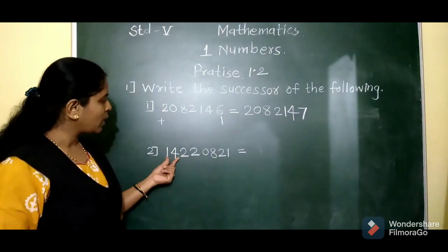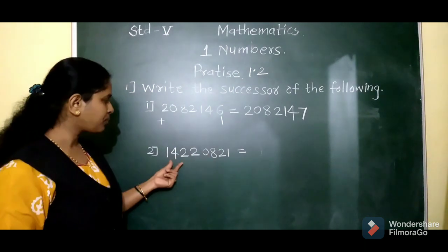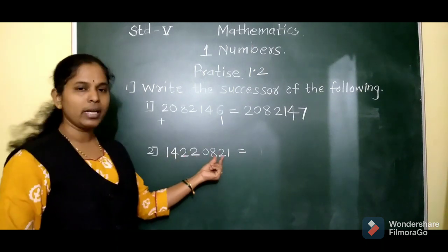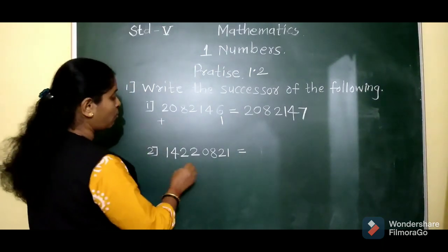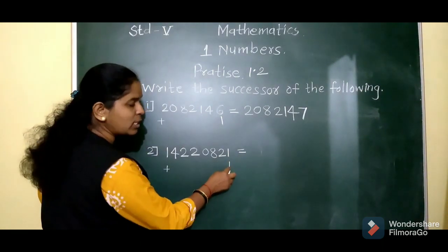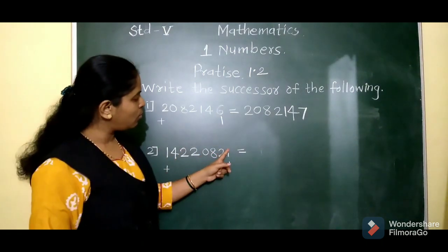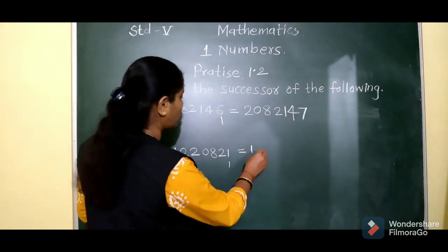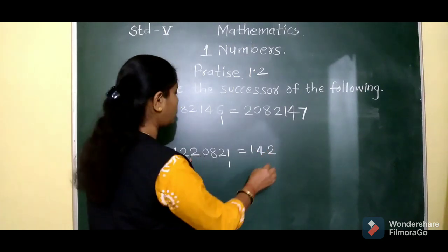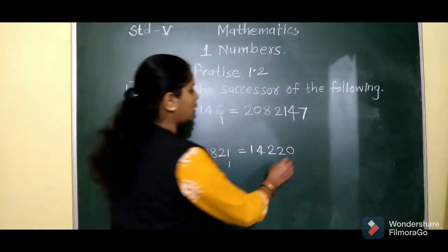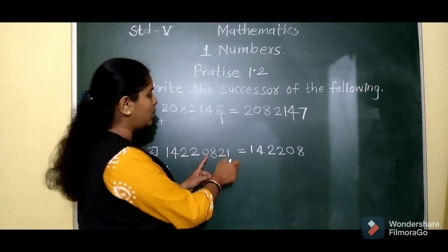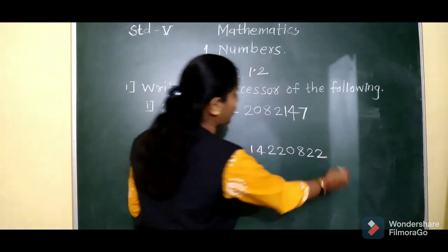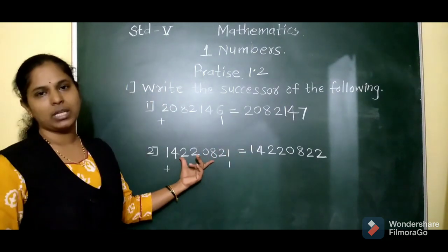Next example for finding the successor. The number is 1,42,20,821. We will add 1 at the 1's place: 1 plus 1 becomes 2. So 21 plus 1 is 22 — the successor is 1,42,20,822. This is the successor of the given number.